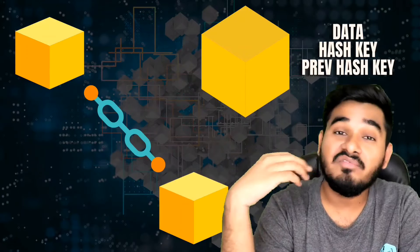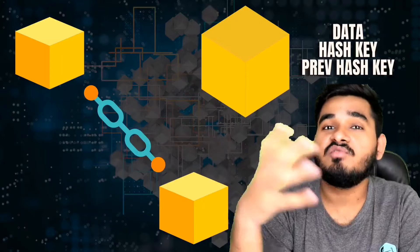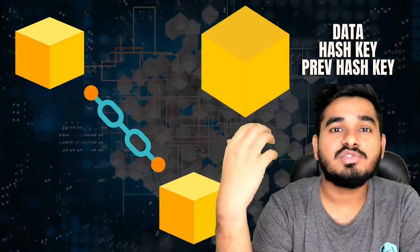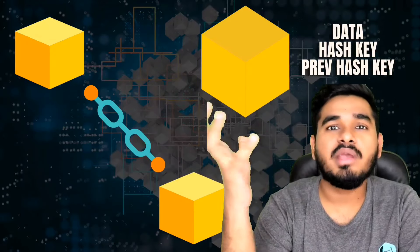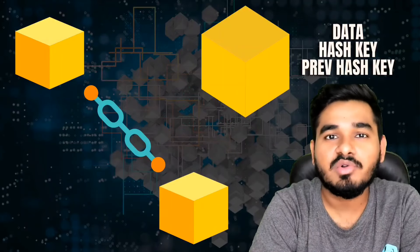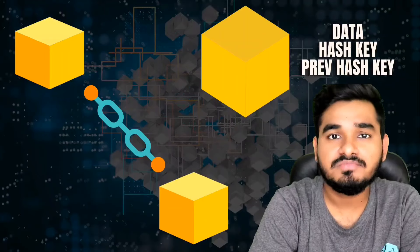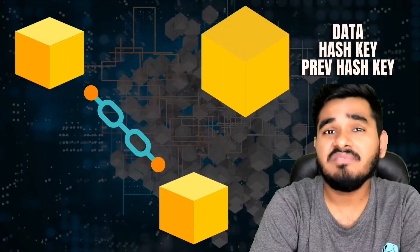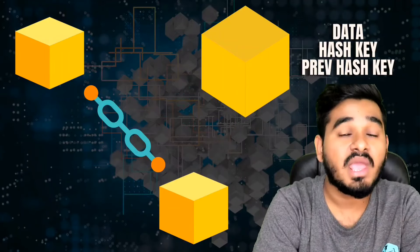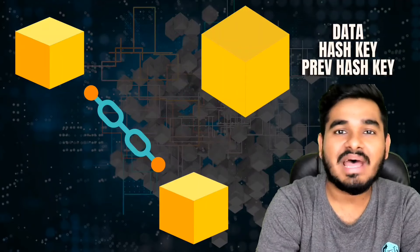Every individual added to the blockchain network will be notified of what transactions are happening on that particular block. They will know the past and the present. In this way you can avoid scams and corruption in a very secure way, because everything will be recorded and if one change is performed, everyone in the blockchain will be notified.